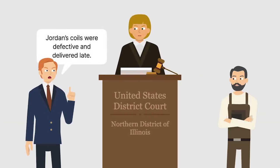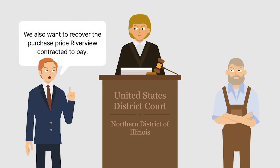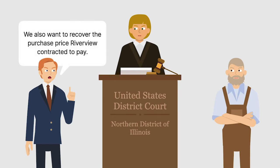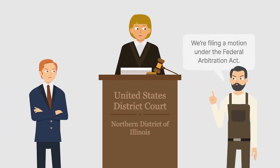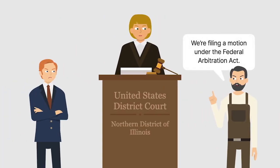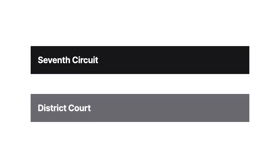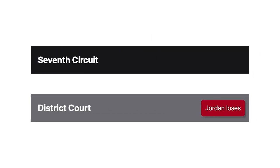Ito filed a claim against Jordan, alleging that the coils were defective and that Jordan's delivery was late. Ito also filed a claim against Riverview to recover the purchase price Riverview had contracted to pay. Jordan filed a motion under the Federal Arbitration Act, asking the district court to stay the action pending arbitration. The district court denied the motion, and Jordan appealed to the Seventh Circuit.